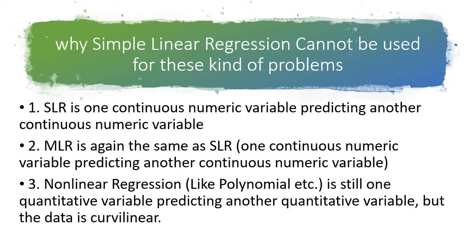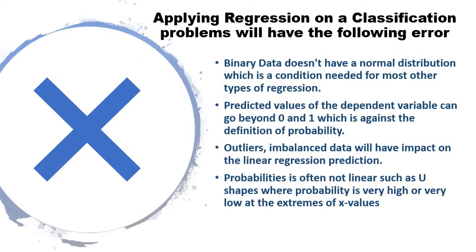Why simple linear regression cannot be used for this kind of problem? Simple linear regression is one continuous numeric variable predicting another continuous numeric variable. In classification we need to predict the category. Similar is the case with multiple linear regression where we're using multiple continuous numeric variables to predict another continuous numeric variable. For non-linear regression like polynomial, we have a quantitative variable predicting another quantitative variable, and moreover the data will be curvilinear, not a straight line. It's also not advisable to use polynomial regression for predicting categories.